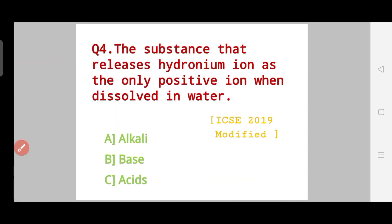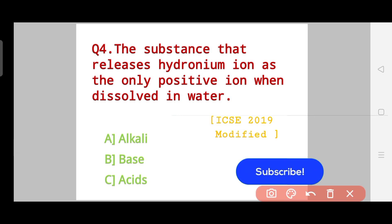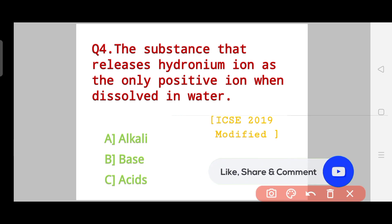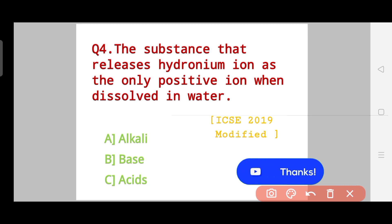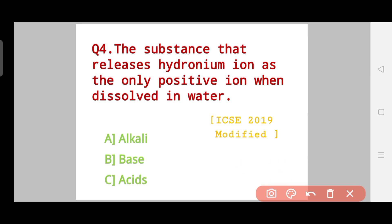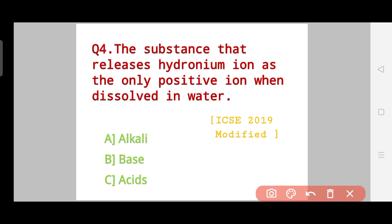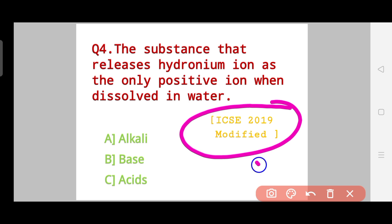Question number four: which substance releases hydronium ion as the only positive ion when dissolved in water? Your options are alkali, base, or acids. This is an ICSE 2019 question and I have modified it.